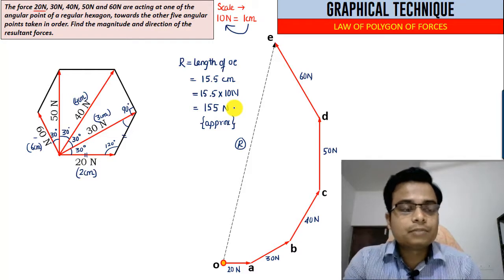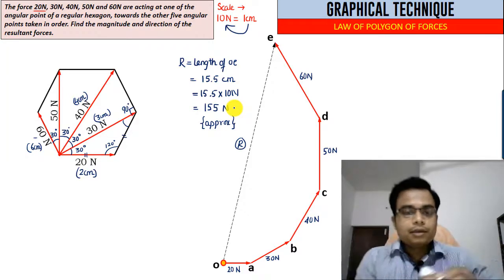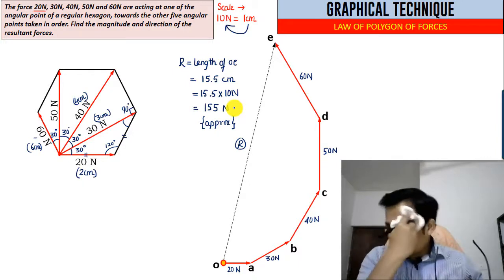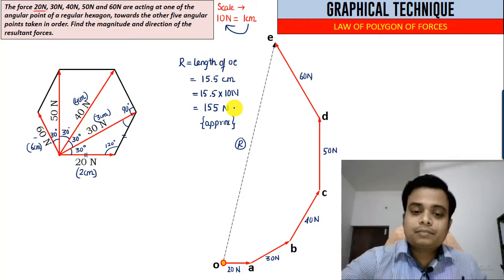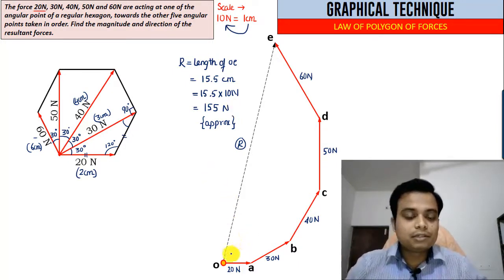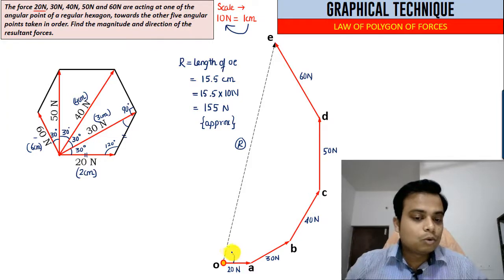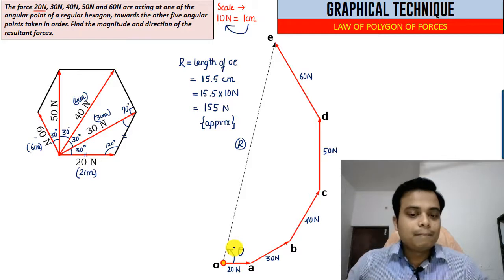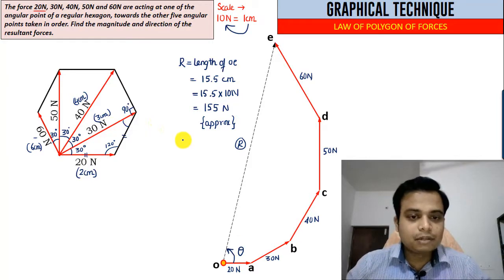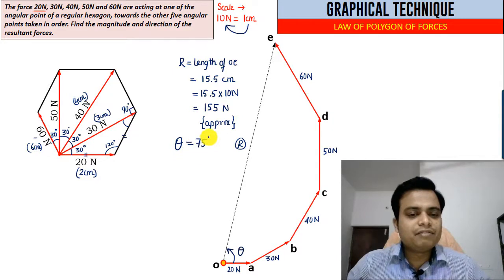Now let me tell you what this angle is. If you keep your protractor over here, this is the angle that the final resultant makes with the horizontal, and the angle that it makes should roughly work out as 75 degrees.